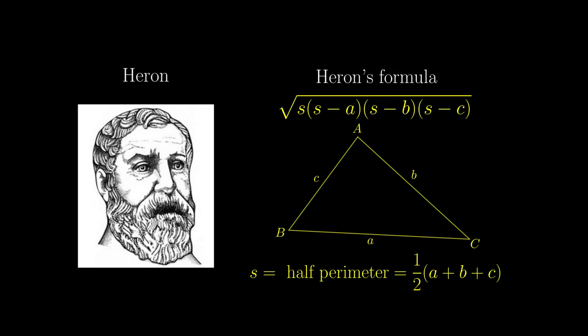square root of s times s-a times s-b times s-c, where s is half the perimeter of a triangle, and a, b, c denote the three side lengths.